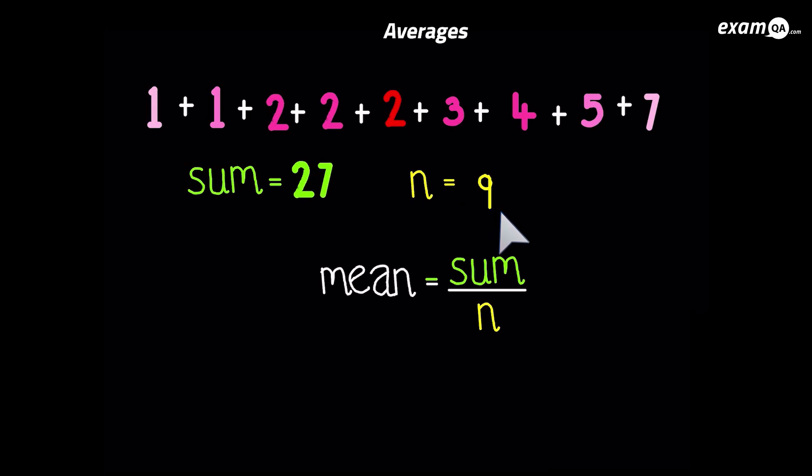Finally, we can fill in that formula. So the mean is 27 over 9. Which gives us 3. So the mean is 3.